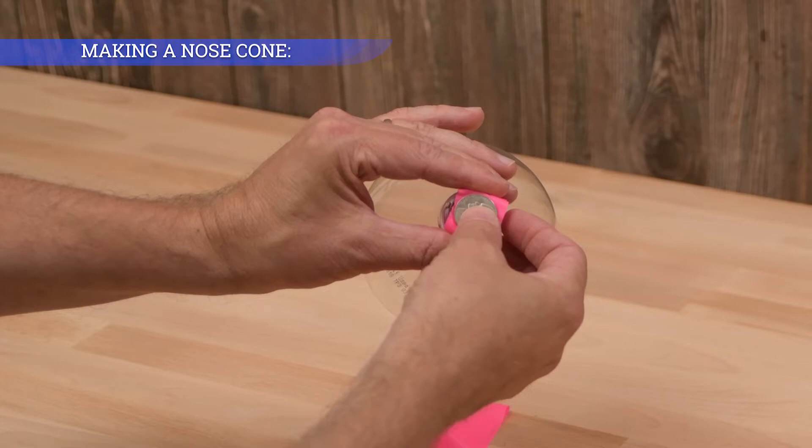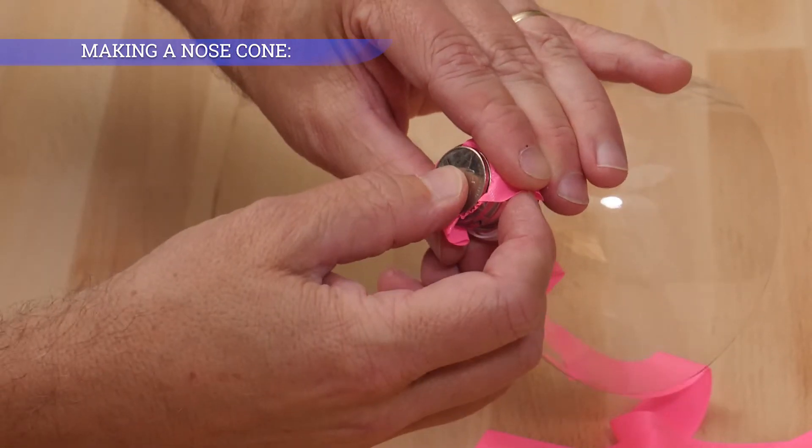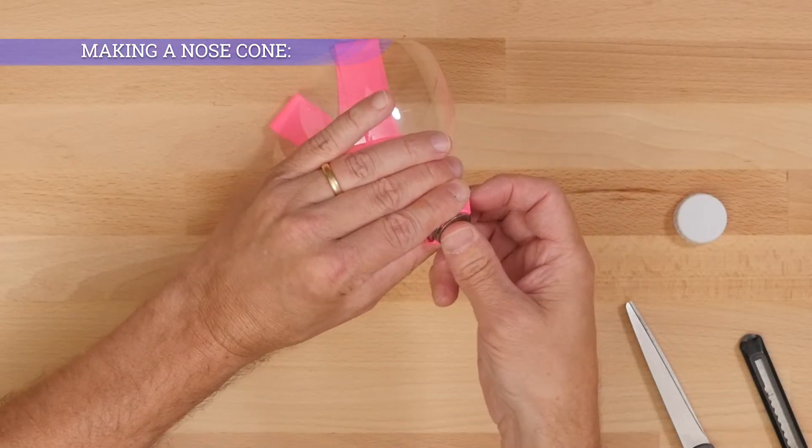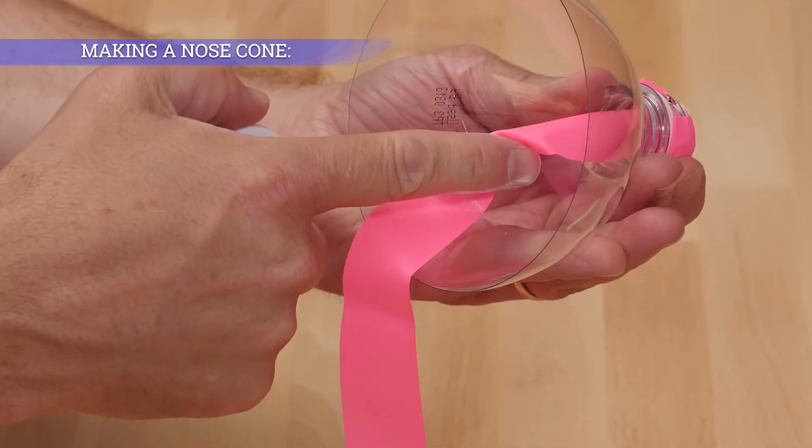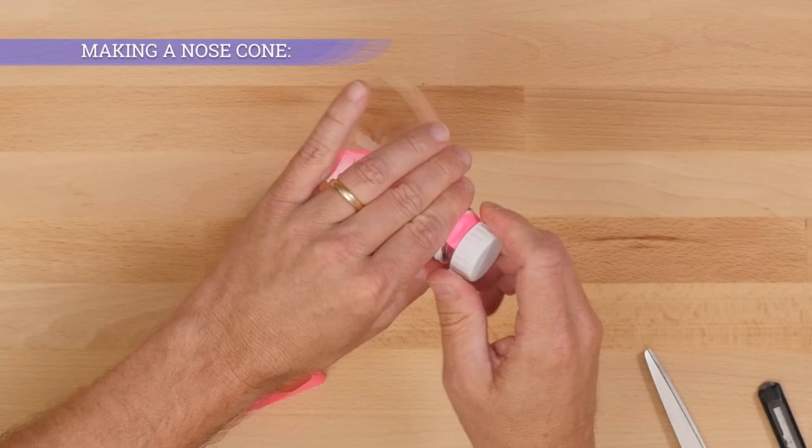Place three nickels inside the nose cone. The flagging tape will hold them in place on the bottom and the cap will cover them on top.